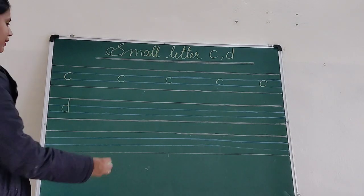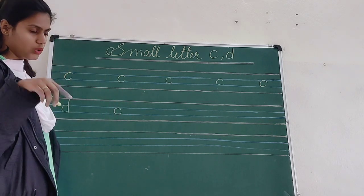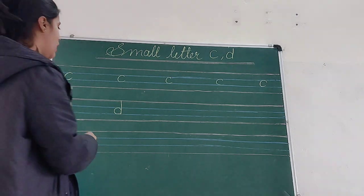For D for dog, we have to draw one small curve in between two lines and then make one standing line. Okay students?